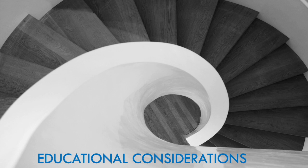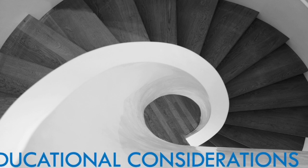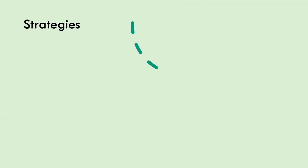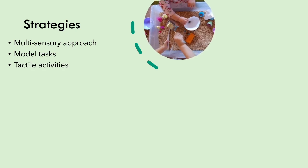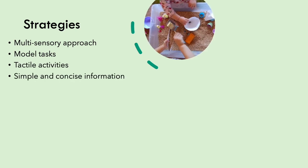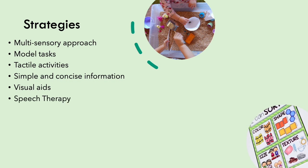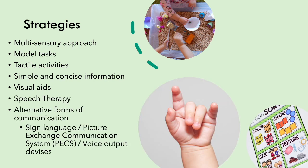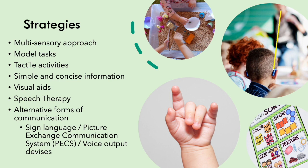For students who may have hearing impairments, let's look at a few educational considerations and strategies. You could use a multi-sensory approach, model tasks for students, use tactile activities, use simple and concise information, use visual aids, provide speech therapy, and alternative forms of communication such as sign language, picture exchange communication, and voice output devices such as the FM radio.